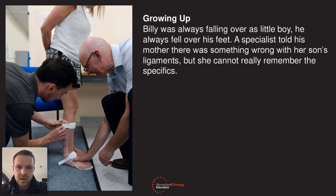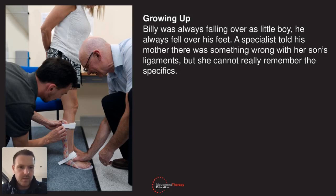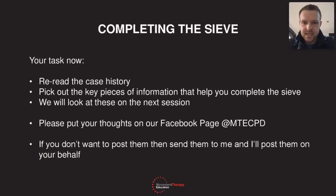Growing up, Billy has always been falling over as a little boy — he always fell over his feet. A specialist told his mother there was something wrong with her son's ligaments, but she can't really remember the specifics. Quite a classic one — they know there's something wrong but they can't remember what.